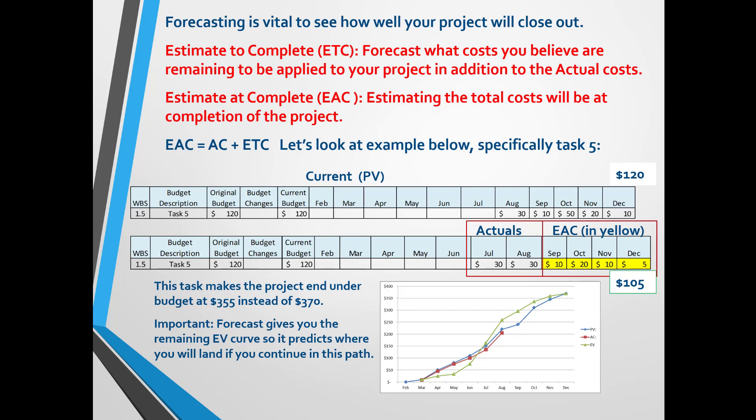Estimate to Complete (ETC) and Estimate at Complete (EAC) are common acronyms in EVM — this is where you predict your project's future based on the information you know so far during execution. The ETC is forecasting the remaining costs required to complete the project. The EAC adds all the costs left with the AC to tell you how much the entire project will cost. The forecasting piece is where the remaining EV curve can be plotted to give you a visual look at where your project will land.